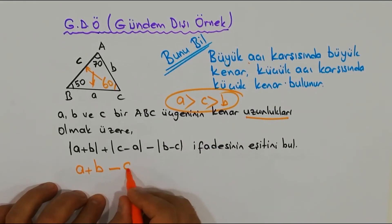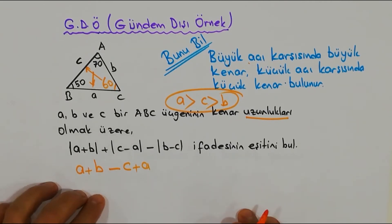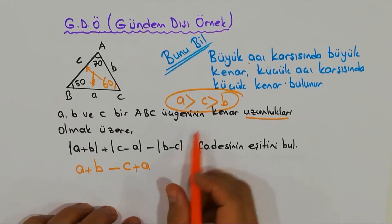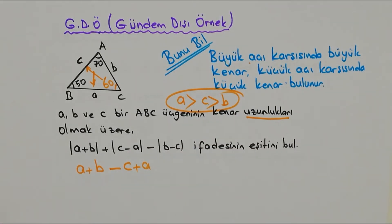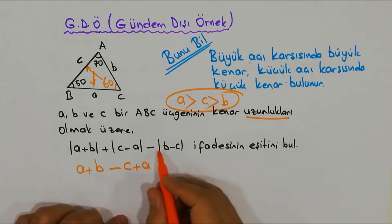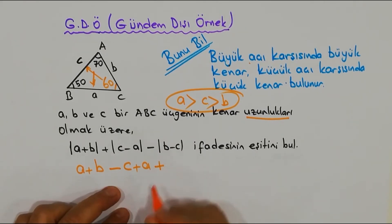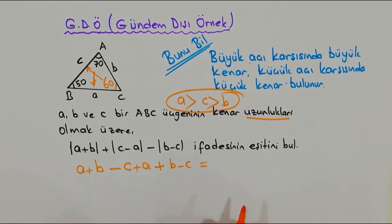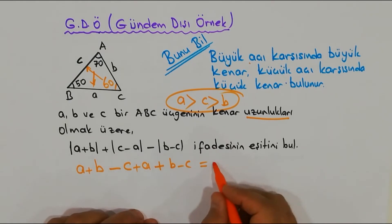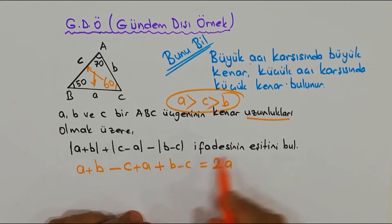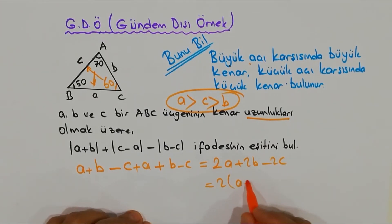Peki |c - a|'yı acaba nasıl bulacağız? |c - a|'nın bize işareti lazım zaten arkadaşlar. c, a'dan küçük mü? Kesinlikle evet. Peki küçük bir sayıdan büyük bir sayı çıkarsanız negatif olmaz mı? Olur. Önüne bir eksi alıp direkt müsaadenizle çıkartıyorum. Bakın eksiyi dağıttım şu anda. Peki b, c'den küçük mü? Küçük. b'den c'yi çıkarsak ne olur? Negatif olur. Peki önde bir eksi var zaten, bizde bir eksi getirsek şöyle bir şey olur. Ve arkadaşlar bir toparlama işi yapıyorum. Şimdi a'lardan kaç tane var? 2. b'lerden kaç tane var? 2. Eksi c'lerden 2. Yani ben 2 parantezini alsam şöyle bir cevap bulurum. GDÖ sorumuz da bu şekilde çözülmüş oldu.